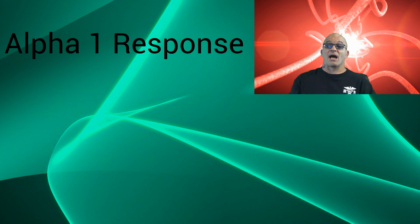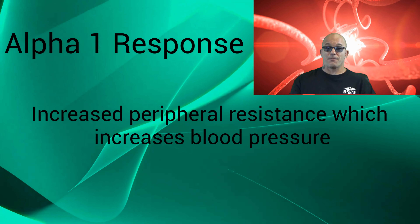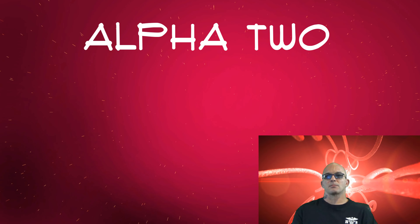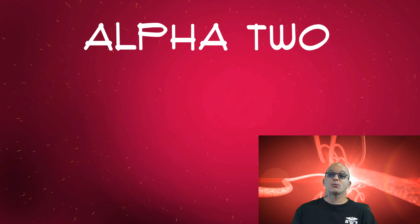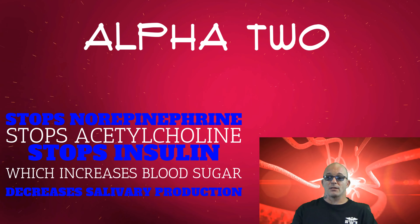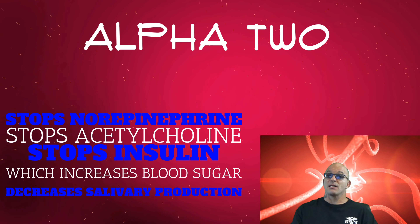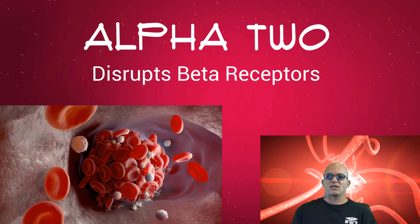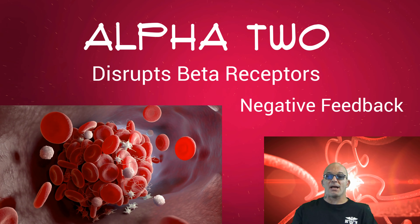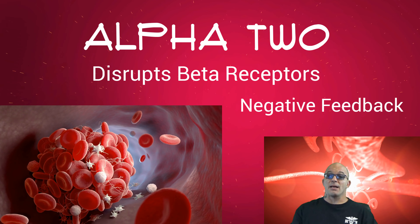In an alpha-1 response, arteries are stimulated. There will be increased peripheral resistance, which increases blood pressure. Pupils will dilate, and the bladder sphincter closes. Alpha-2 receptors have inhibitory effects that include stopping the release of norepinephrine and acetylcholine, stopping the release of insulin — which will increase blood sugar — and decreasing salivary production. They can also disrupt the effects of the beta receptors, which can lead to platelet aggregation. It works by negative feedback to the beta receptor effects. When their actions are too high or too much, the alpha-2 receptors inhibit further potential.